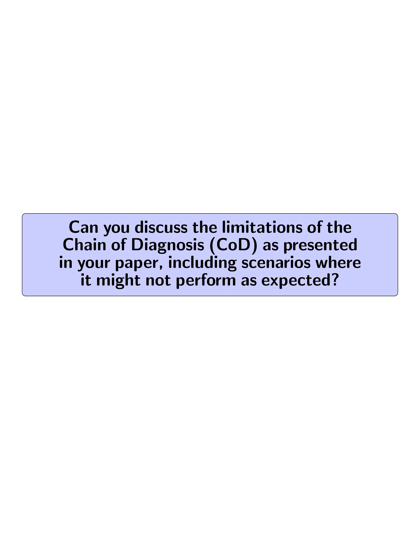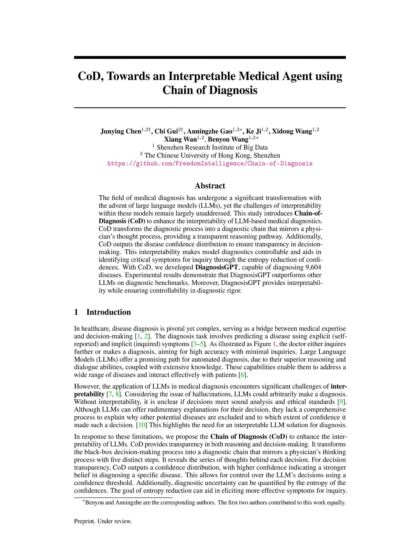Can you discuss the limitations of the Chain of Diagnosis (COD) as presented in your paper, including scenarios where it might not perform as expected? The Chain of Diagnosis (COD) has notable limitations, particularly in its reliance on the quality and comprehensiveness of the synthetic training data generated from disease encyclopedias. While the model can diagnose a wide range of diseases, it may struggle in scenarios where the symptoms presented are atypical or not well represented in the training dataset, potentially leading to inaccurate diagnoses.